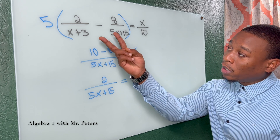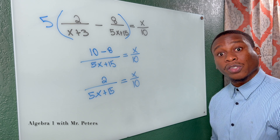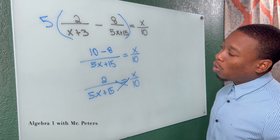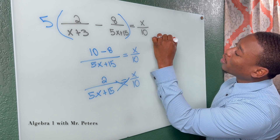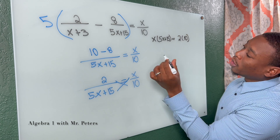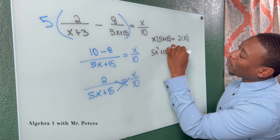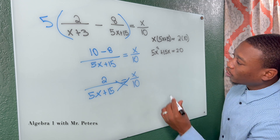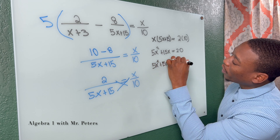So now we simplify by subtracting: we have 2 over 5x plus 15, and this is equal to x over 10. Now that we've combined these two fractions, we can use cross multiplication. Cross multiplying gives us x times 5x plus 15 equals 2 times 10. After distributing, we have 5x squared plus 15x equals 20. We know it's a quadratic, so we set the equation equal to 0 by subtracting 20: 5x squared plus 15x minus 20 equals 0.